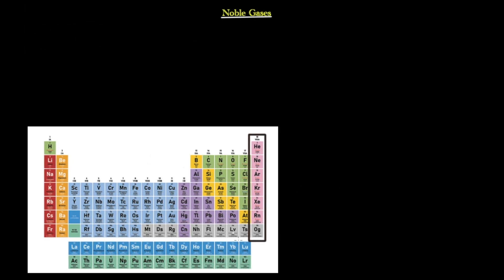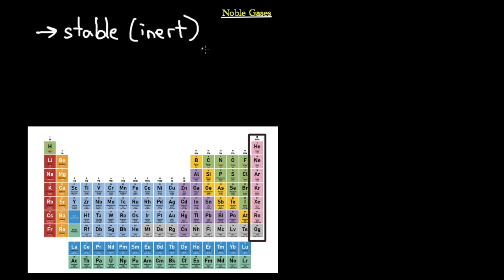The final group, group eight, is the noble gases. These are very special elements because they are extremely stable. No other group of elements is as stable as the noble gases. They are non-reactive and inert because they already have a full octet — eight electrons in their outer shells. They neither want to give up electrons nor gain any, so their reactivity is extremely low.